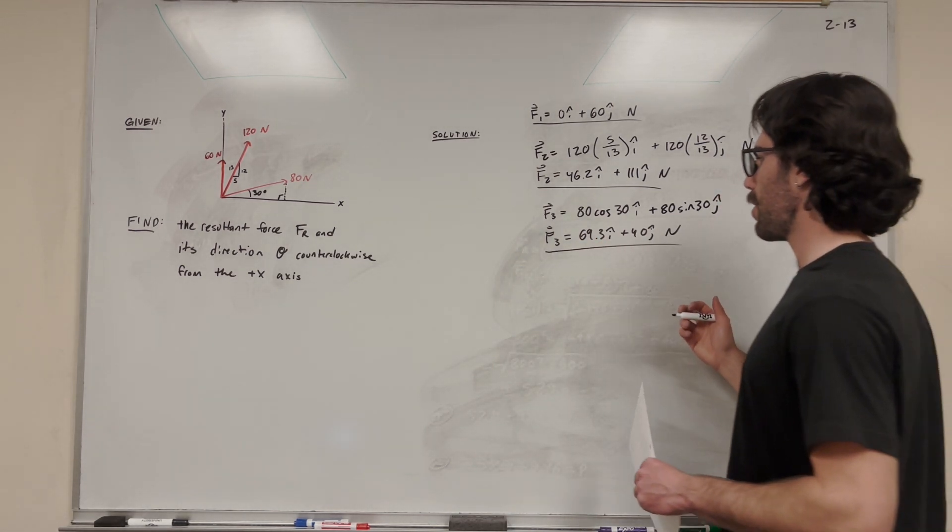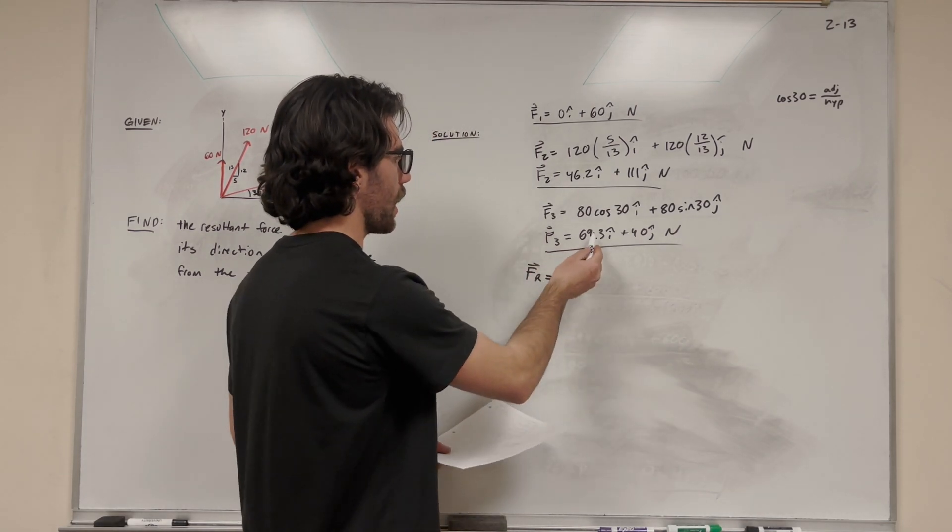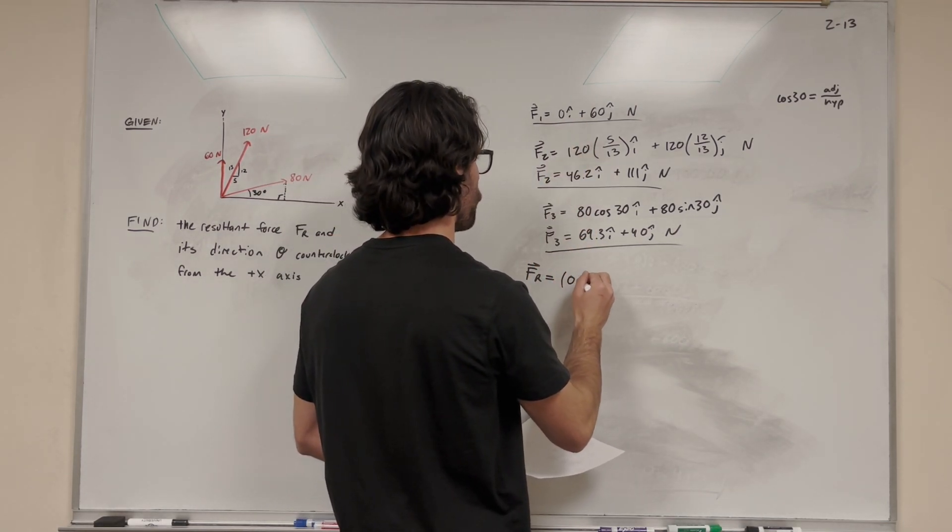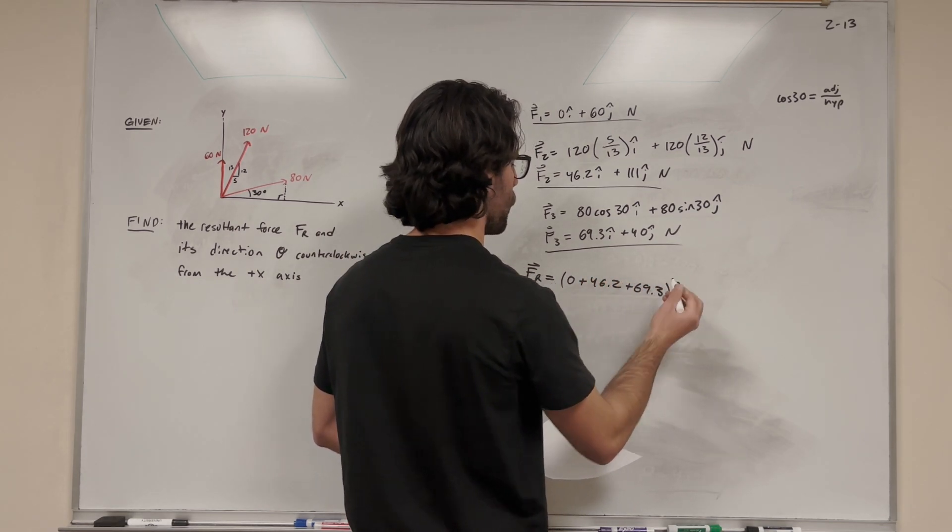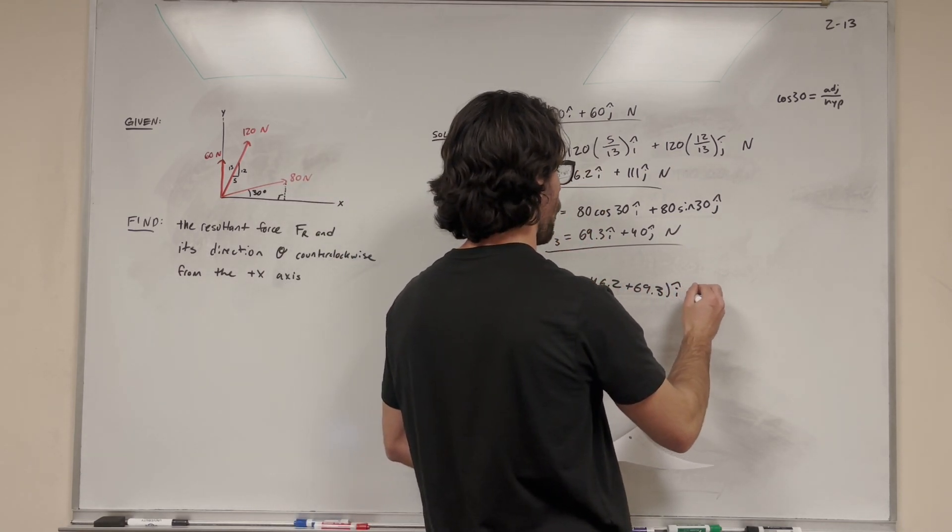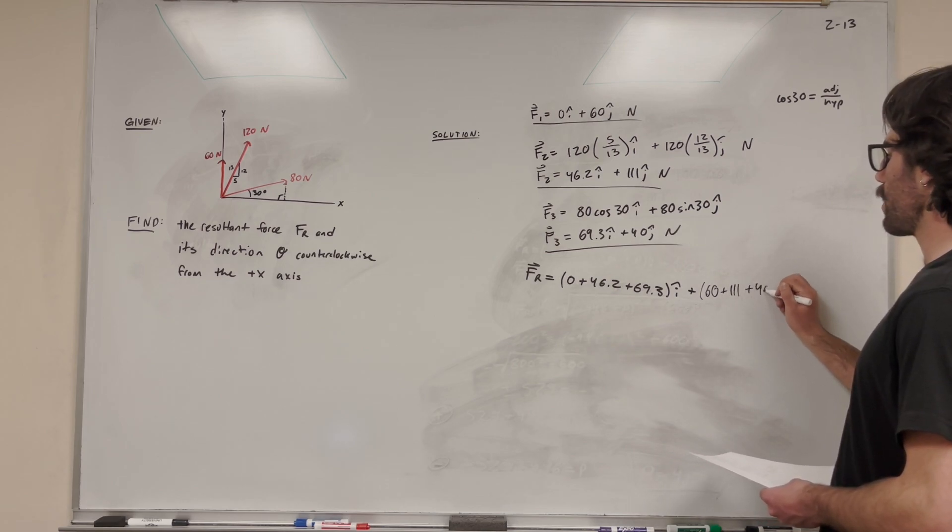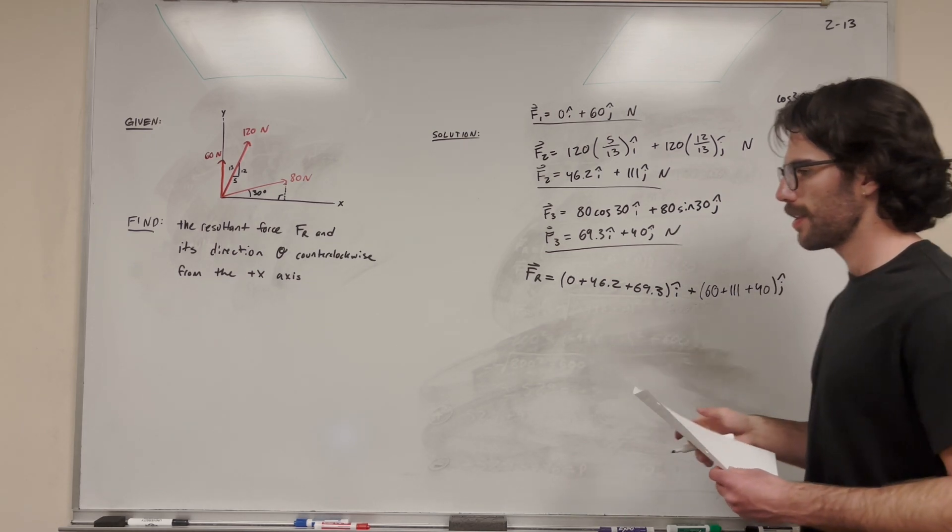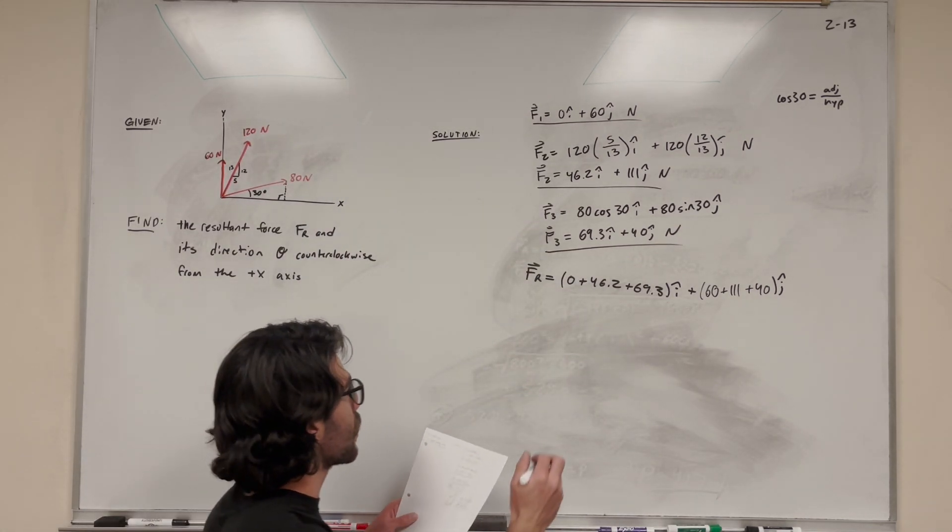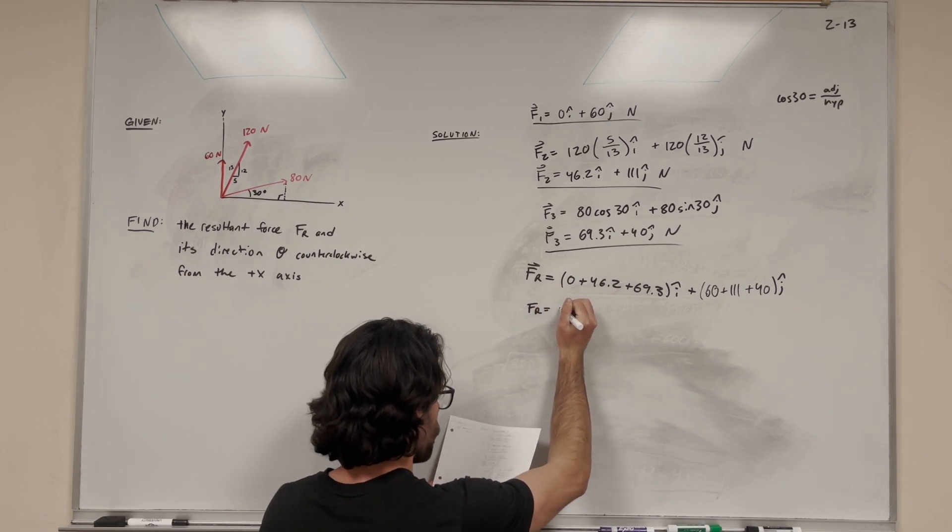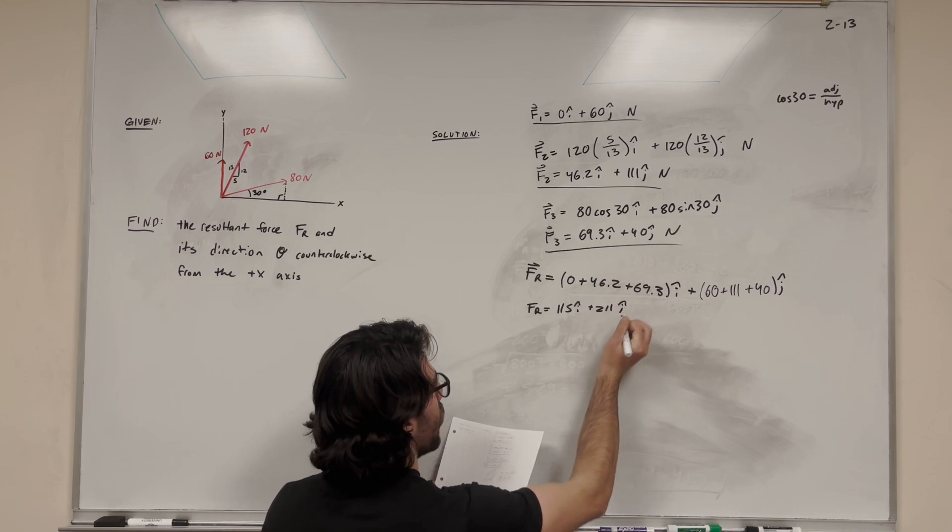So now when we look to force resultant, we're just going to add them all up, so let's do that. So force resultant, now we're going to start by adding all the i components together, so it's going to be 0 plus 46.2 plus 69.3i. So this is just all the i components, and then we're going to add up all the j components. So it's going to be plus 60, plus 111, plus 40j. So do the math on this, and you get that the force resultant is equal to 115i plus 211j newtons.